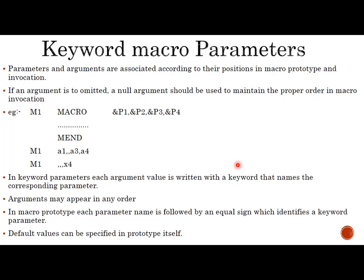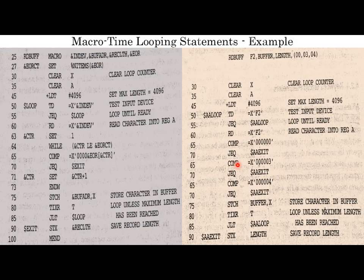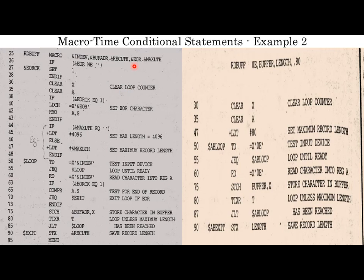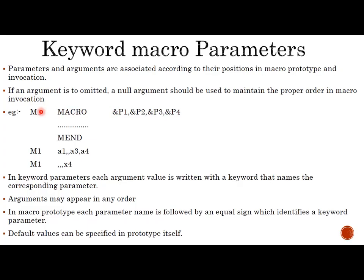Next are keyword macro parameters. Parameters and arguments are associated by their positions in the macro prototype and invocation. If an argument is omitted, a null argument should be used to maintain proper order. In this example, macro M1 has four parameters. In the first invocation only three arguments are provided — the second argument is missing, so the value of P2 is null. The order of parameters and arguments must be maintained.